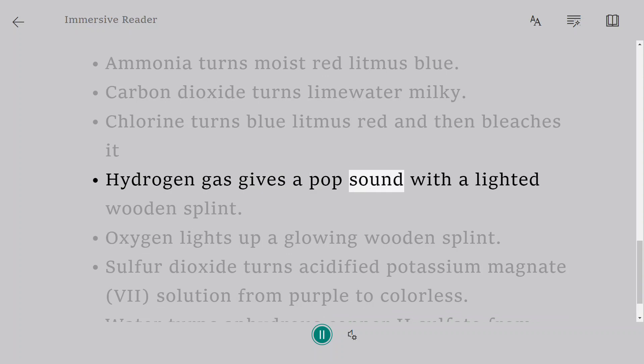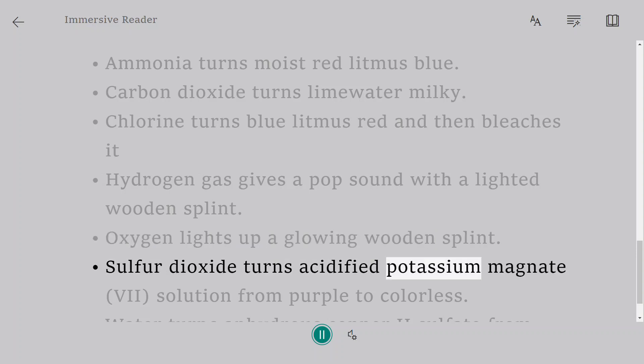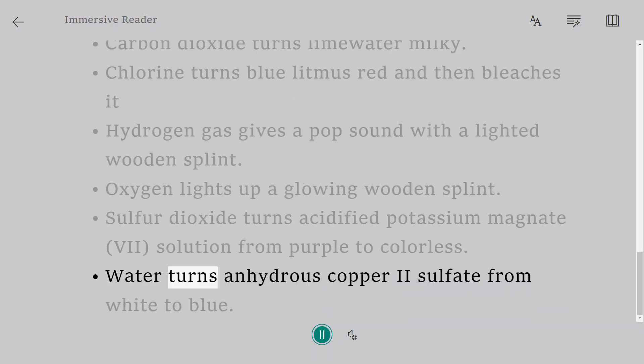Hydrogen gas gives a pop sound with a lighted wooden splint. Oxygen lights up a glowing wooden splint. Sulfur dioxide turns acidified potassium manganate VII solution from purple to colorless. Water turns anhydrous copper II sulfate from white to blue.